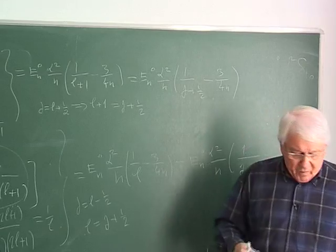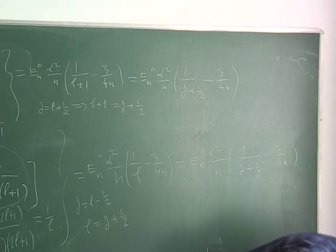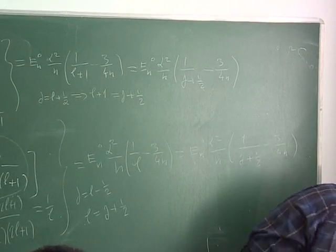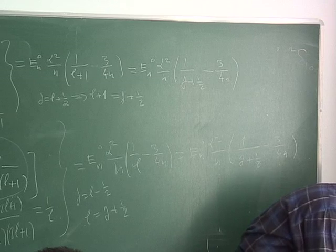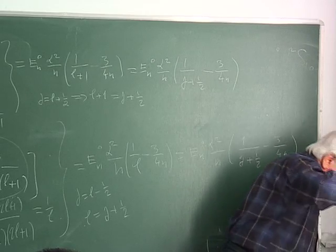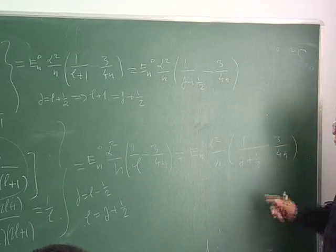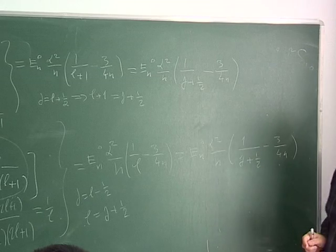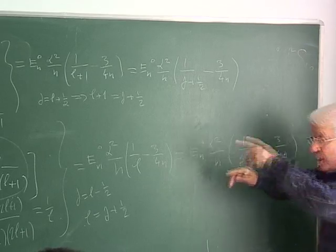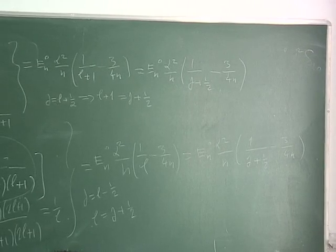Is this a simple mathematical trick or a meaningful thing? Obviously, I'm doing something meaningful because what is conserved is the total angular momentum. So a meaningful quantum number is the total angular momentum. Therefore, it makes sense to express the result in terms of the total angular momentum quantum number. That's what I have done. This is the L not equal to 0 case.